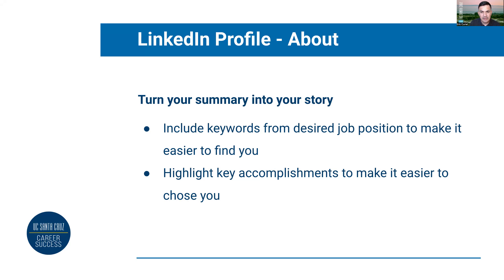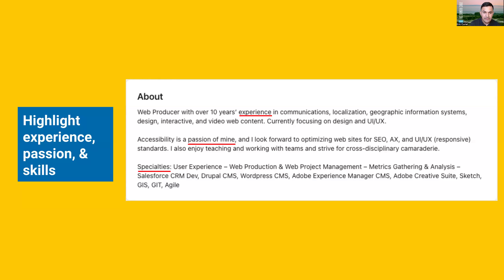The next section we recommend focusing on is your about section. This is where you're able to really summarize your overall experience. This is a great place to include more of those keywords and highlight the skills that you have or the specific positions that you're interested in — doing this will make it easier for recruiters to find you when they're searching for candidates. We also recommend highlighting your key accomplishments, because not only do you want to be found by recruiters, but you also want to stand out. Here's an example of an about section where you can highlight your experience, talk about your passions, and also mention the different skills that you have. This section is super customizable, but highlighting your relevant skills and accomplishments is really the key goal.